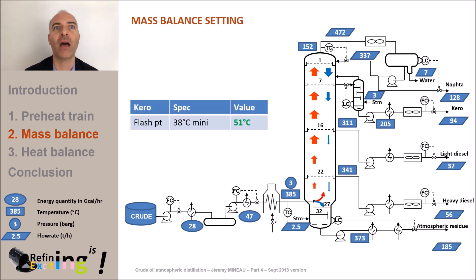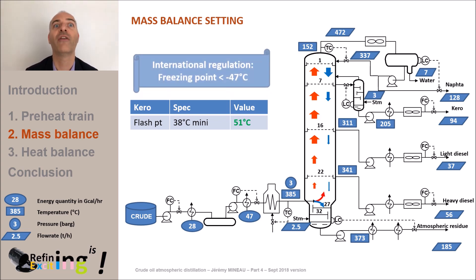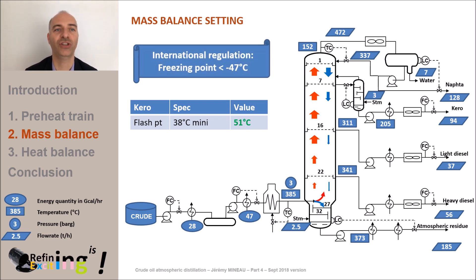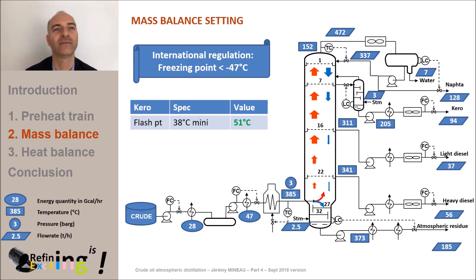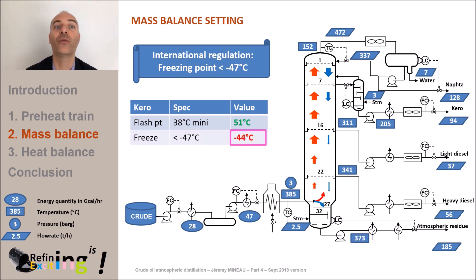Now that we have arbitrated the amount of naphtha versus that of kerosene, it is time to focus on the arbitrage between kerosene and light diesel. This time, we need to look at the freezing point of kerosene. International regulations impose a point of disappearance of crystals — sometimes called freezing point — below minus 47°C. Up to a temperature of minus 47°C, it is not desired that crystals appear in the kerosene. These crystals are related to the heavy hydrocarbon content in the kerosene cut. In our case, with 94 tonnes per hour of kerosene, we have a freezing point of minus 44°C, which is not in line with the regulations.